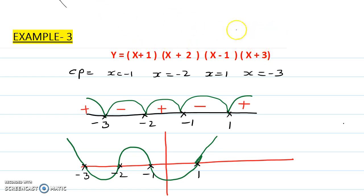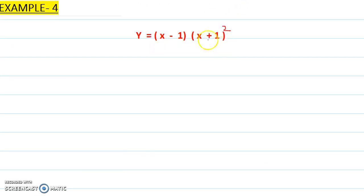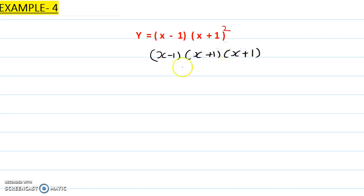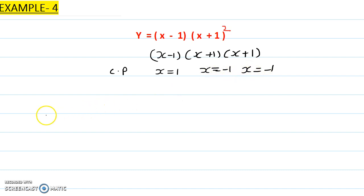The next question requires great care. It is y = (x-1)(x+1)². Notice the squared term — that is quadratic. Expanding: (x-1)(x+1)(x+1). Finding critical points: x=1, x=-1, and x=-1. These two points are overlapping. When points overlap, you must check every single gap in the bridge shape diagram individually.